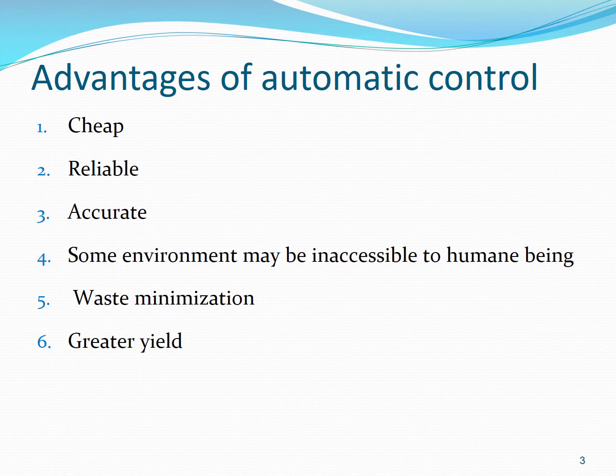The third advantage is accuracy. Automatic control is more accurate because the sensors utilized in automatic control can give more accurate readings. Consider, for example, the liquid level control system in the last slide. A human eye can measure the level of a liquid with an accuracy of at most in millimeters. However, if you use other sensors, the accuracy can be significantly improved. Therefore, automatic control is more accurate.